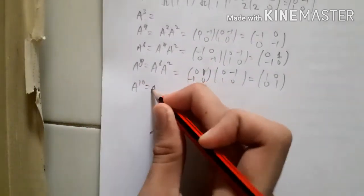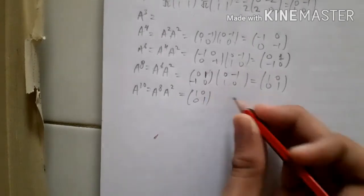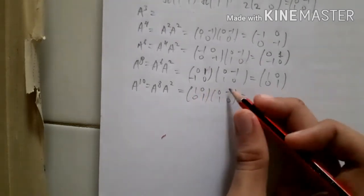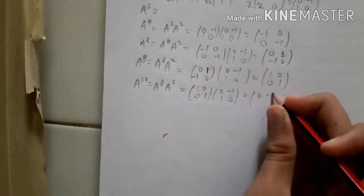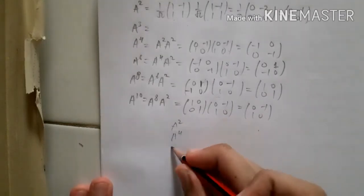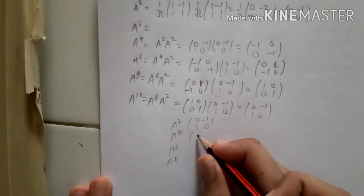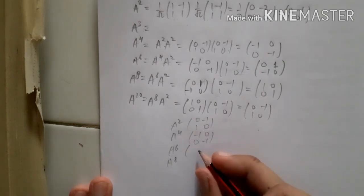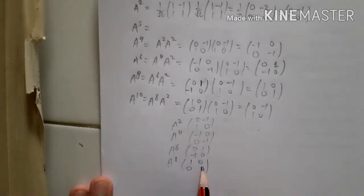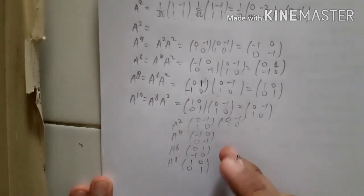Since A⁸ equals the identity matrix, the pattern repeats with period 8. We have: A² = [[0,-1],[1,0]], A⁴ = [[-1,0],[0,-1]], A⁶ = [[0,1],[-1,0]], A⁸ = [[1,0],[0,1]] (identity). Then A¹⁰ follows the same as A², giving [[0,-1],[1,0]], and the cycle repeats for A¹², A¹⁴, A¹⁶, etc.